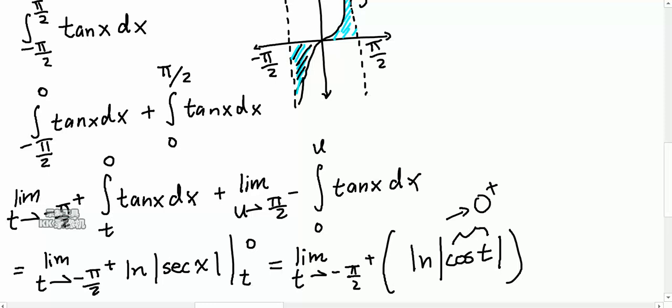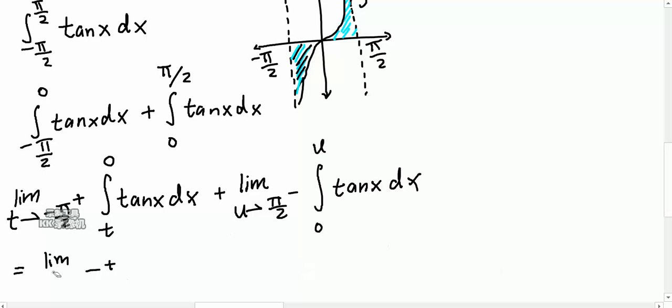So, the natural log of cosine of t, which is approaching 0 plus, is going to be negative infinity, technically. Okay, so this whole thing, it's going to boil it down to, the first part is going to be equal to negative infinity.